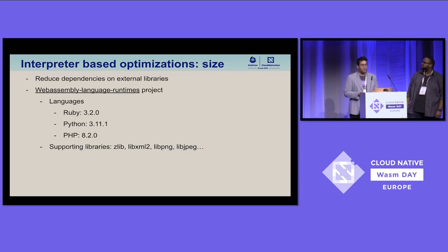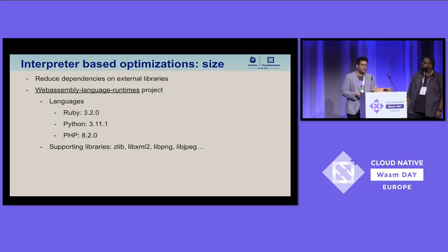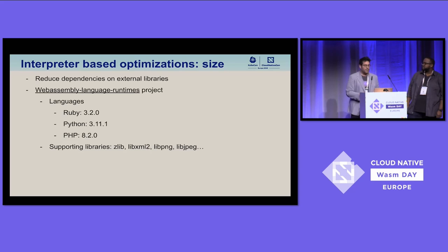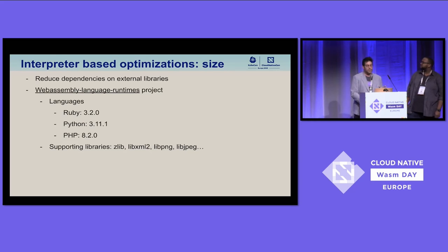The first thing we want to do in terms of size is to reduce external dependencies on interpreters. For that, the WebAssembly Labs team created the WebAssembly Language Runtime project that other companies are using and contributing to today. We have published Ruby, Python, and PHP — you can just use those interpreters and run your programs in those languages.